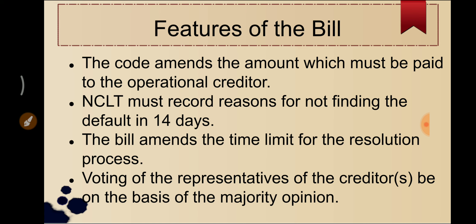The last point relates to representative voting of financial creditors. The code specifies that in certain cases, such as when debt is owed to a class of creditors beyond a specified number, financial creditors will be represented on the Committee of Creditors by an authorized representative. For example, if 600 or 700 people have subscribed to debentures of a company and the company becomes insolvent, those representatives were to vote on behalf of the financial creditors as per the instructions received from them.